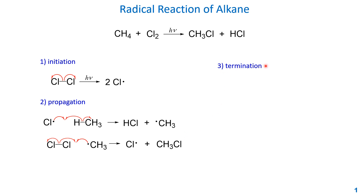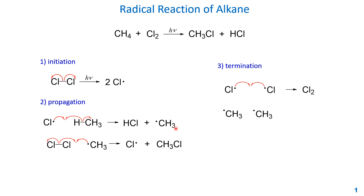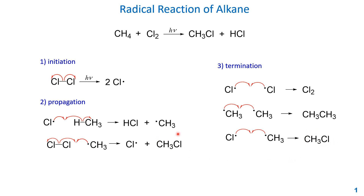After the limiting reactant is consumed, we go to the termination step. The leftover radicals quench each other. For example, two chlorine radicals can react to form the chlorine molecule. In initiation and propagation, steps usually generate one radical, but in termination radicals react with each other to form a neutral product. Another possible termination is two methyl radicals combining, and they can also cross-react — chlorine radical with methyl radical — to form a quenched product. The majority of product is generated in the propagation steps.